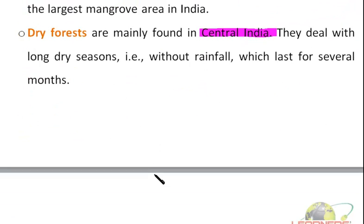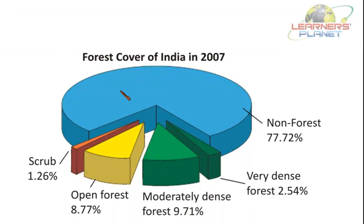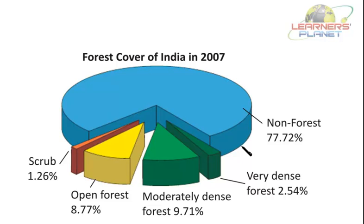There is a pie chart showing the forest cover of India in the year 2007. Scrublands were 1.26%, open forests were 8.77%, moderately dense forests were 9.71%, very dense forests were 2.54%, and non-forests, meaning water bodies, were 77.72%. The scrublands are areas covered mainly by grass or thorn scrubs, lying in the Deccan Plateau, extending across Maharashtra, Karnataka, Andhra Pradesh, and Tamil Nadu, and are commonly known as alpine tundra, found lining the Himalayan region.